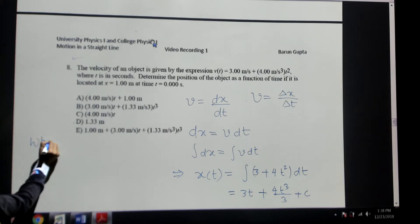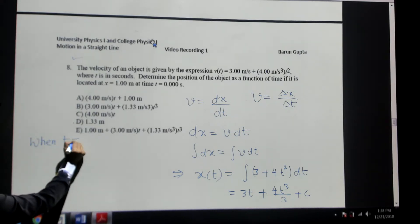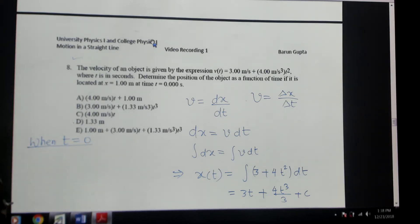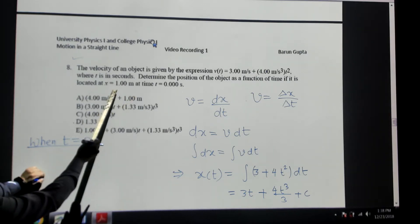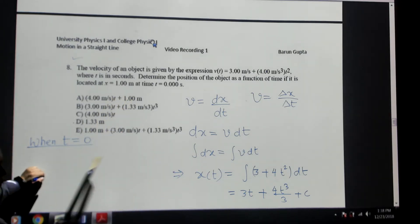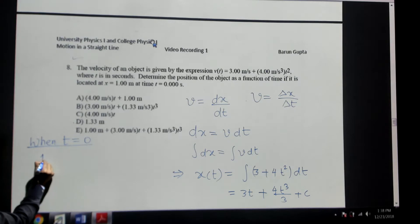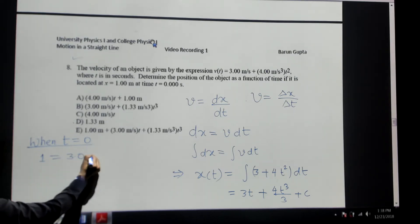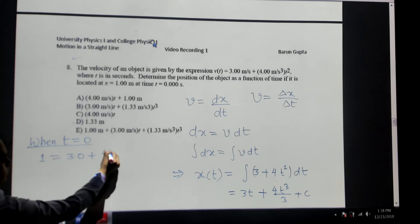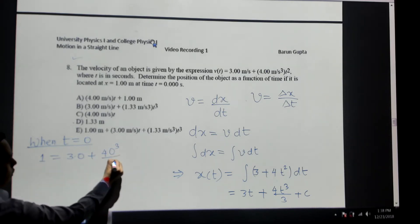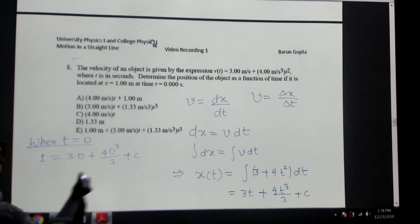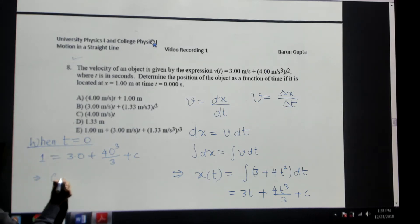When the time is 0, the position x is equal to 1 meter. So I'm just plugging into this equation: 1 = 3 times 0 plus 4 times 0 cubed divided by 3 plus constant C. So C will be 1 meter.